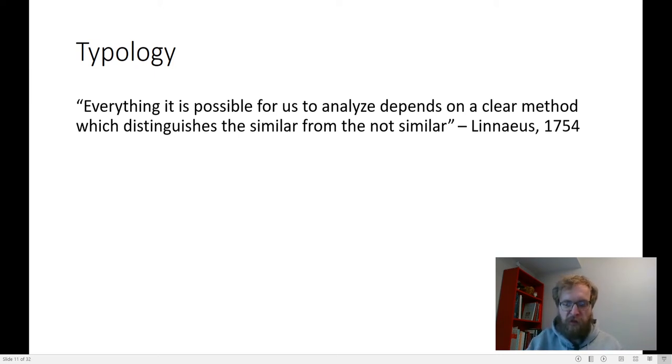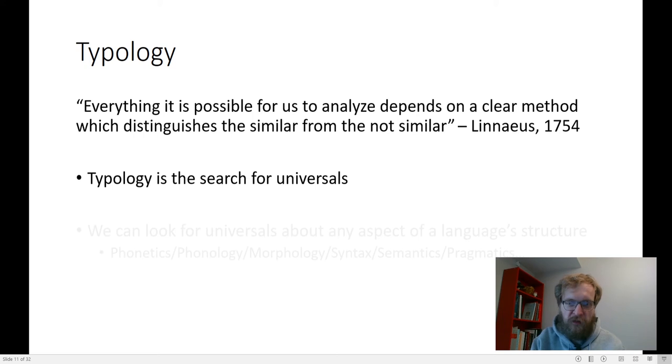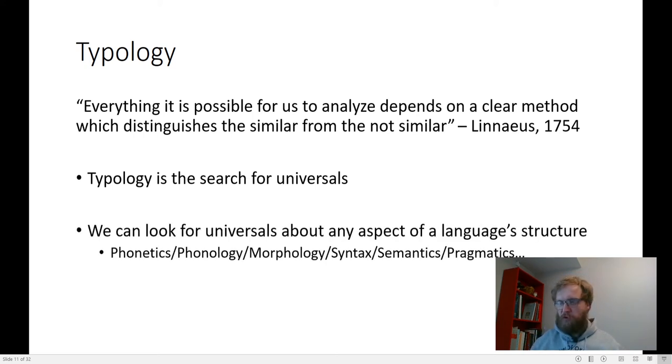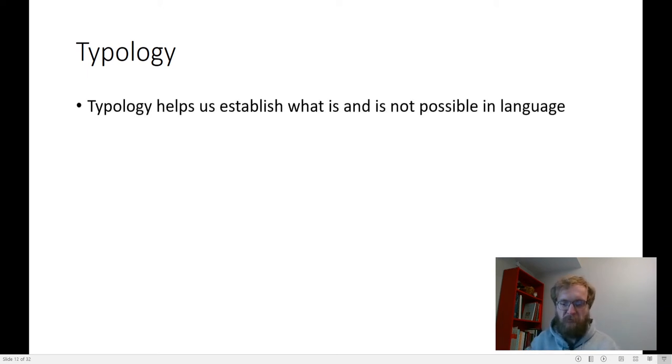The typological perspective of looking at language should be pretty familiar to you if you took, for example, biology classes. That's the sort of way that we look at biological species. As Carl Linnaeus said, everything it is possible for us to analyze depends on a clear method which distinguishes the similar from the not-similar. It sounds complicated, maybe, but really all it is is about what is the difference that makes a difference in language. Typology, essentially, simply the search for universals. What is true or not true in every single language that we have ever known about? You can look for universals, of course, across any domain of language.